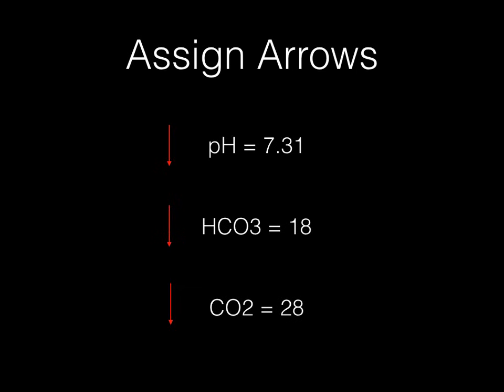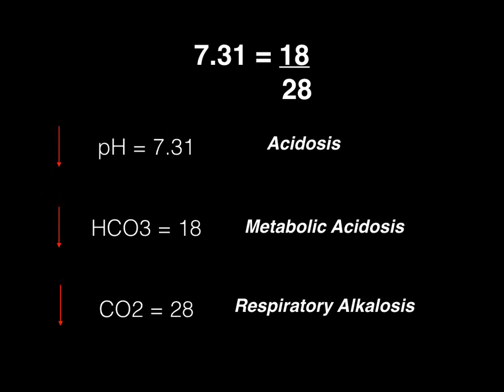His bicarbonate is also down because the normal bicarbonate — our numerator — is 24, so this patient has a decreased bicarbonate. For carbon dioxide, it's also decreased because we said that carbon dioxide — our denominator — should normally be 40. So all three of his values are decreased. The next step is to name the primary deficit and the compensation, so we set up our equation: 7.31 equals 18 over 28, meaning pH equals bicarbonate divided by carbon dioxide with his values plugged in. We then have to name his deviations by looking at the numerator and denominator and deciding how those changes affect the pH.